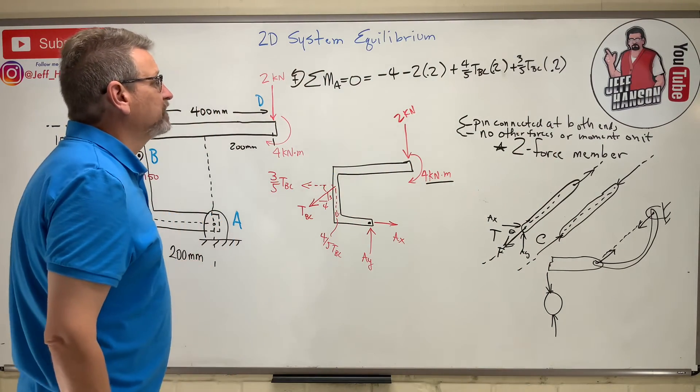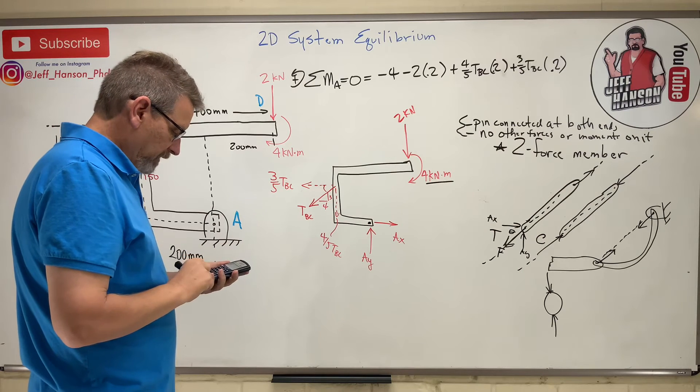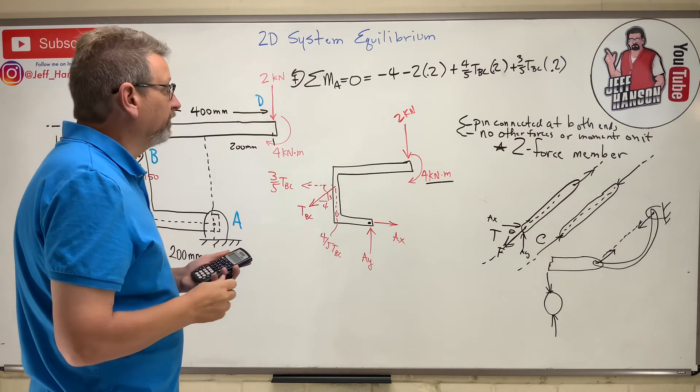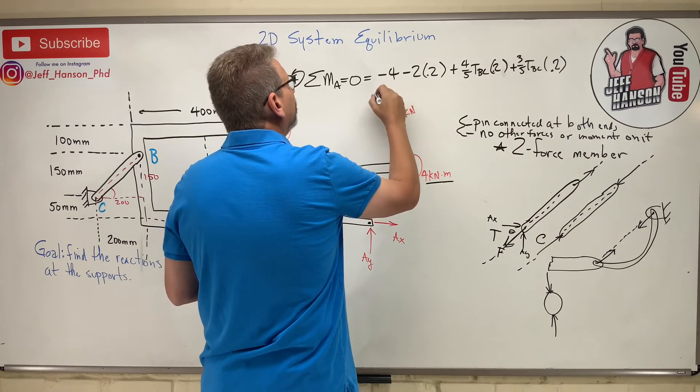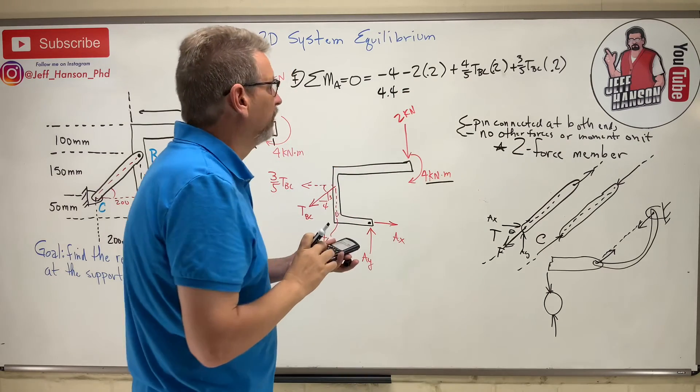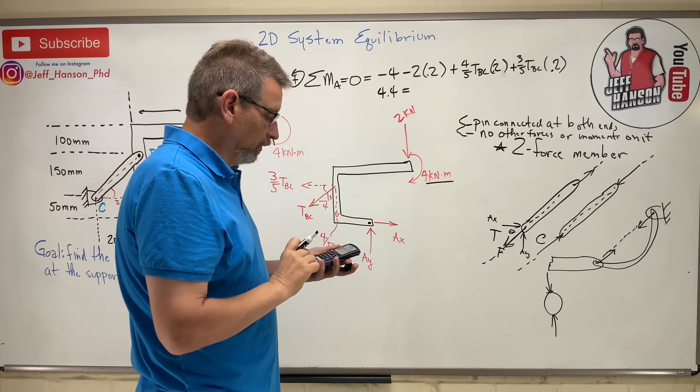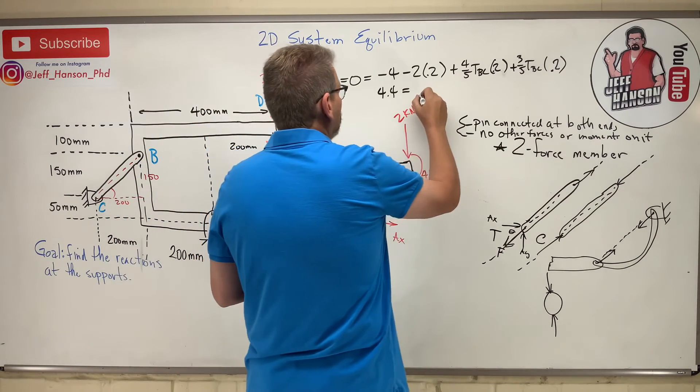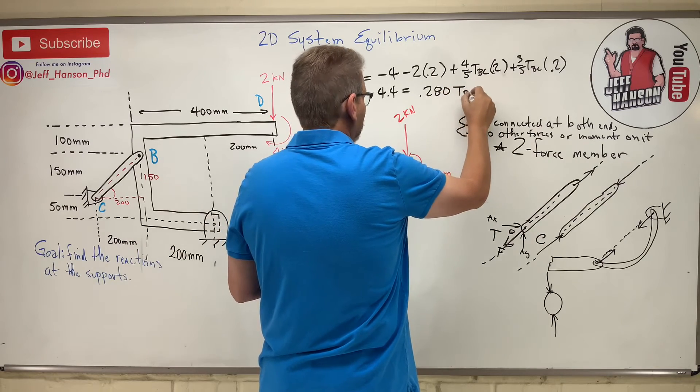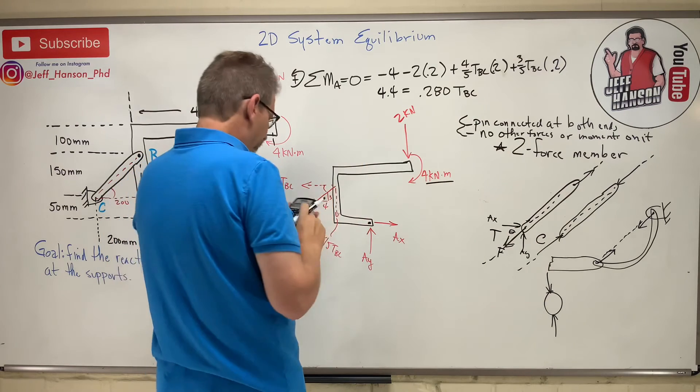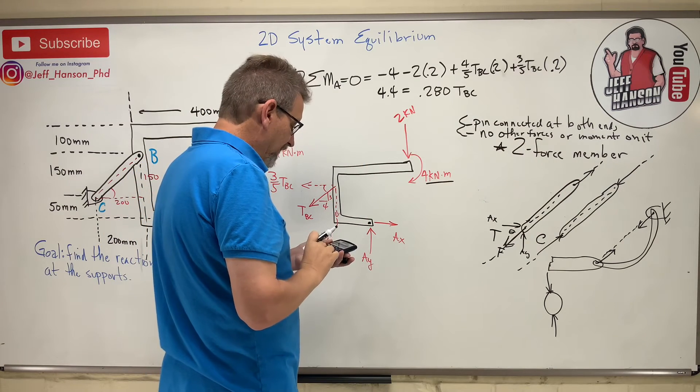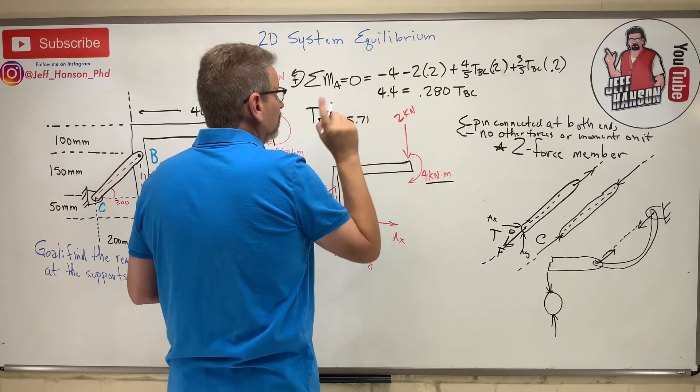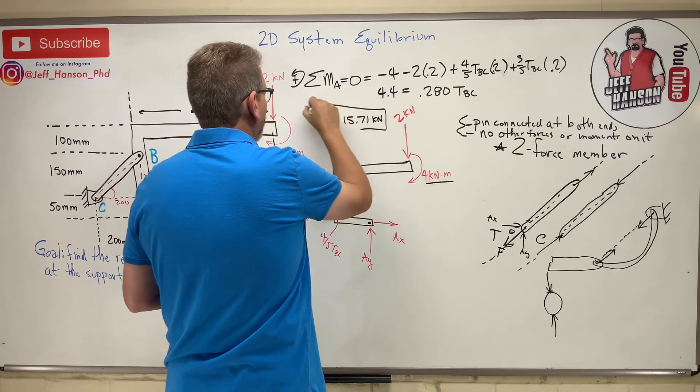So now all we have in there in that equation unknown is TBC. So let's see what we got here on. We got four plus two times point two, which is a 4.4. So I'm going to move these negatives to the other side. So 4.4 is equal to, and then I want to do that over there, 0.8 times 0.2 equals plus 0.6 times 0.2 equals 0.280 TBC. And therefore, let's do a little dividing there. 4.4 divided by 0.28 equals 15.71. So TBC equals 15.71 kilonewtons.